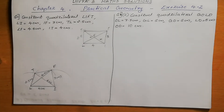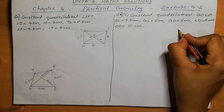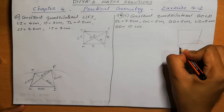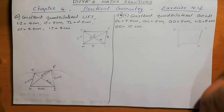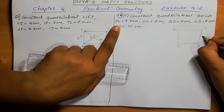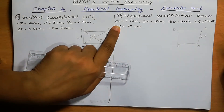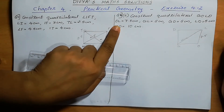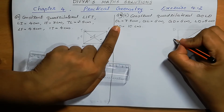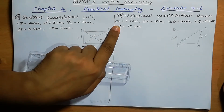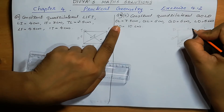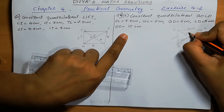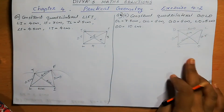Next, construct quadrilateral GOLD — that is also a quadrilateral, meaning a four-sided figure. Any figure we can draw. We can mark G, O, L, D. OL is 7.5, GL is 6 cm, GD is 6 cm, LD is 5 cm, and OD is 10 cm. Using these measurements, we are going to draw the figure.